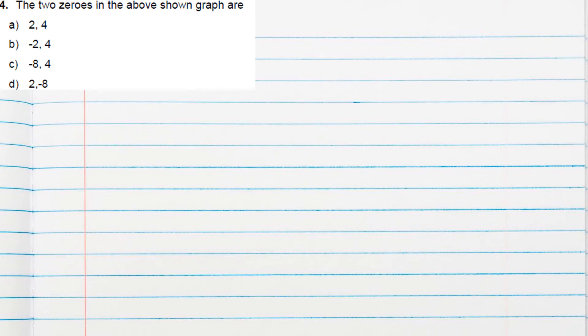Question 4: what are the two zeros in the above graph? We just calculated them — the zeros are -2 and 4, so option B is correct.